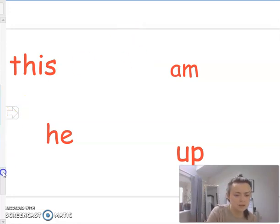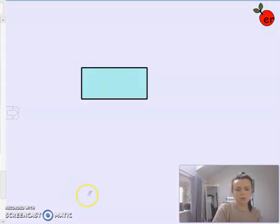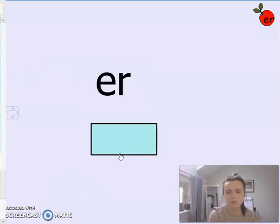Right, let's have a look at our new phoneme for today. In front of you, you will see two letters and that's our grapheme, and that grapheme is represented by the sound er. Okay, er as in her. So an e and an r together make the phoneme er.